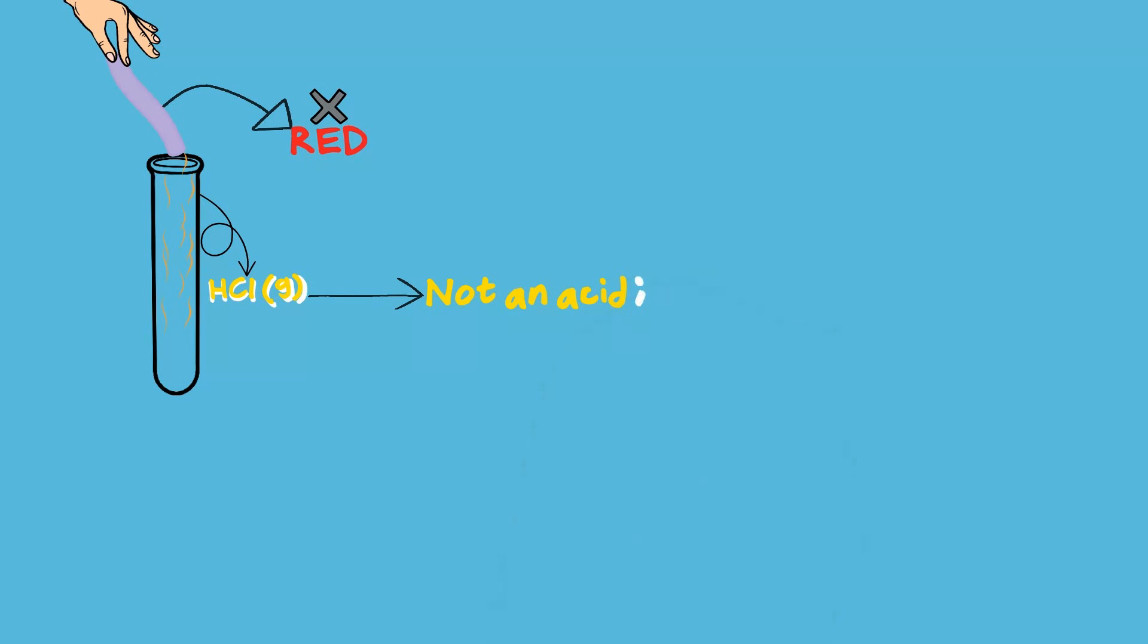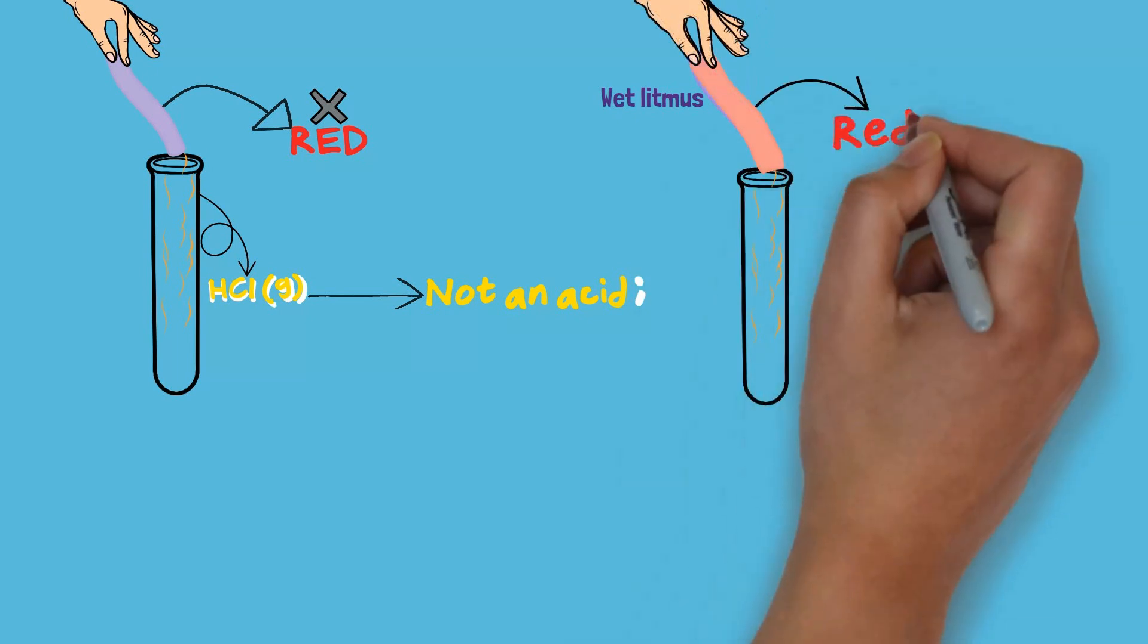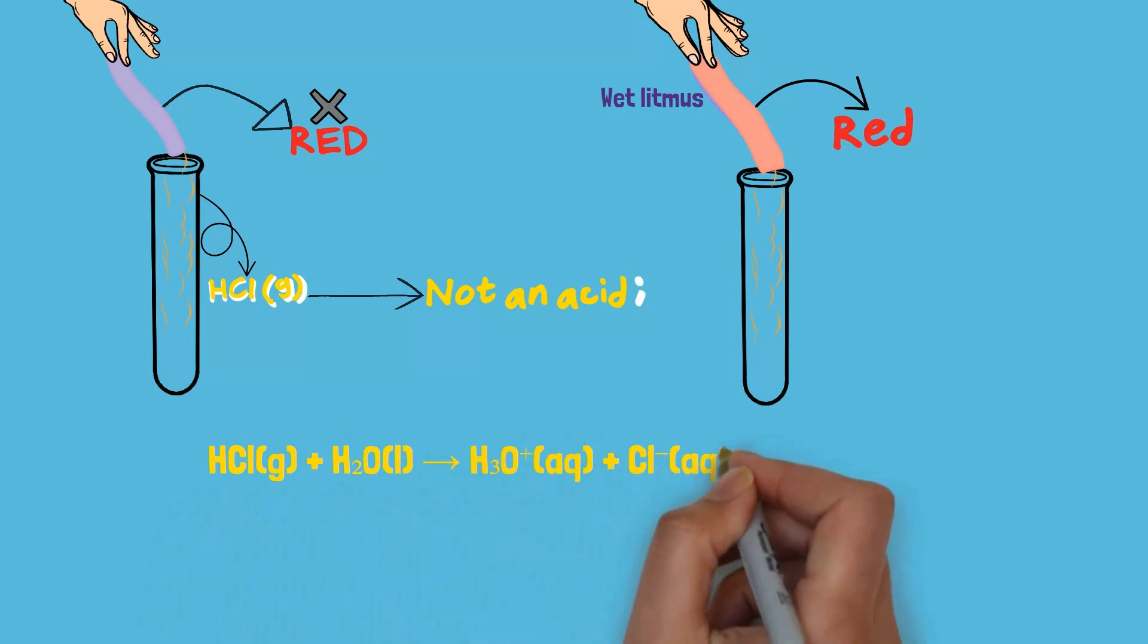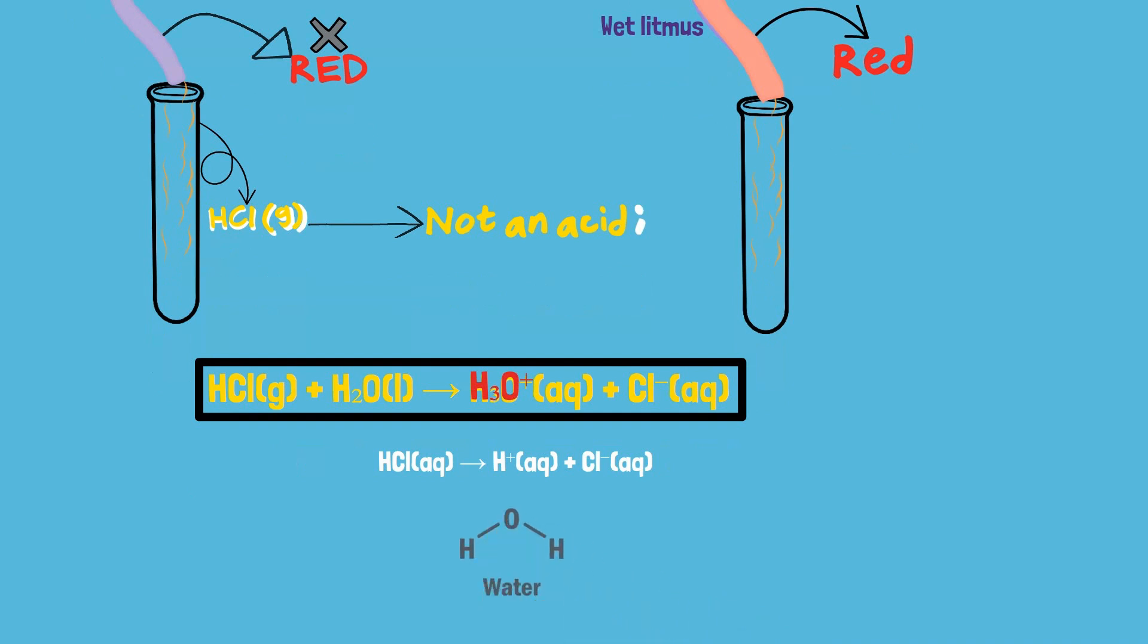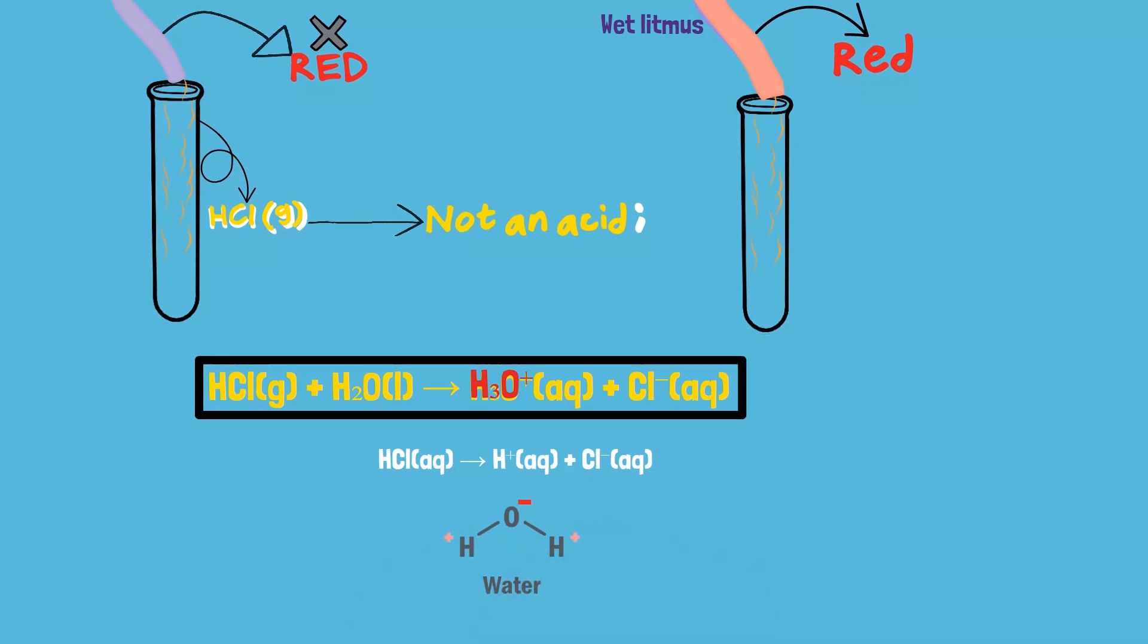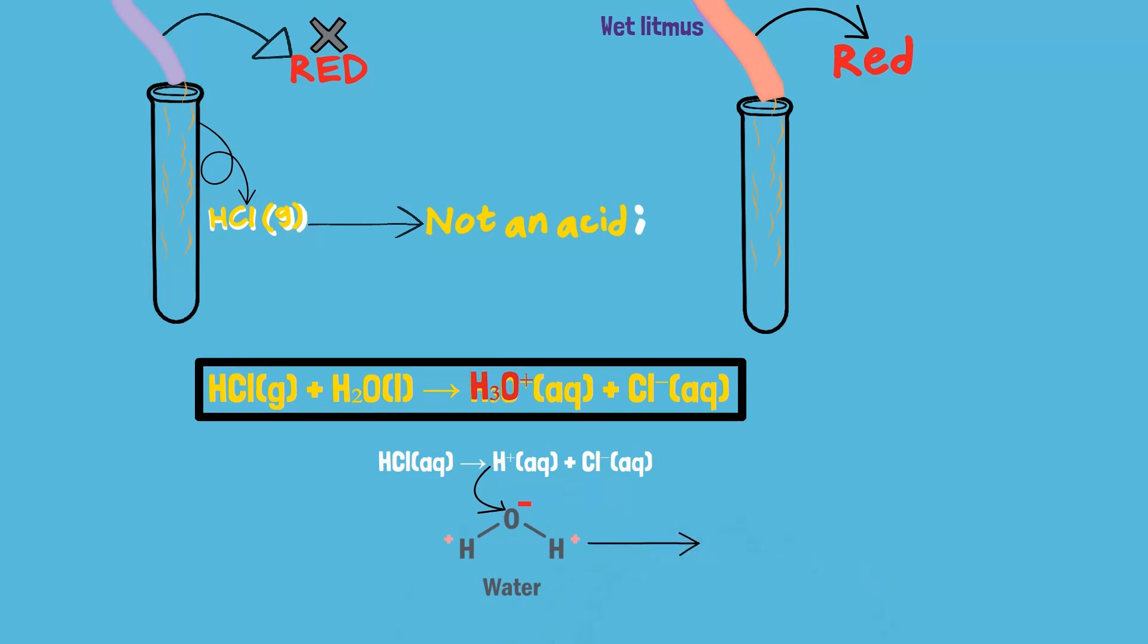However, when we test it with wet litmus paper, it turns red because HCl dissociates and forms hydronium ions. This happens because water is polar. Oxygen, being electronegative, has a negative charge and attracts the H-positive ions from HCl, forming hydronium ions.